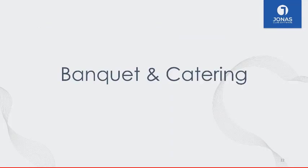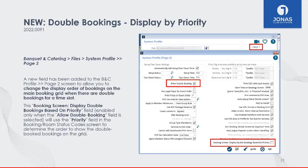Now moving on to what's new in Banquet and Catering. For double bookings — hopefully a big win — we've added a new field to the Banquet and Catering profile on the page two screen: Display Double Bookings Based on Priority. This allows you to change the display order of bookings on the main booking grid when there are double bookings for a time slot.